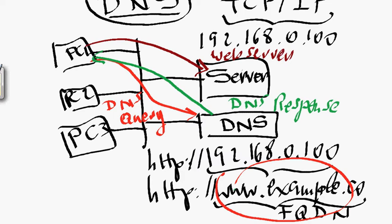Once PC1, for example, receives the IP address from the DNS server, it uses that IP address to establish a direct connection with the web server. So I don't have to remember the IP address of every machine I access — I just use the name. My computer needs to know the IP address of the local DNS server, contacts it with a DNS query containing the server name, receives the DNS response, and then uses the IP address to contact the web server directly. If you already have the IP address, you don't need to contact the DNS server. DNS server is contacted only when you use names to refer to specific computers.